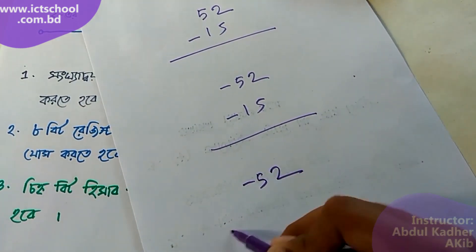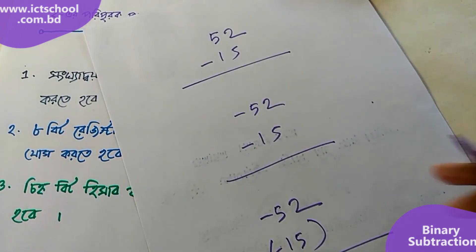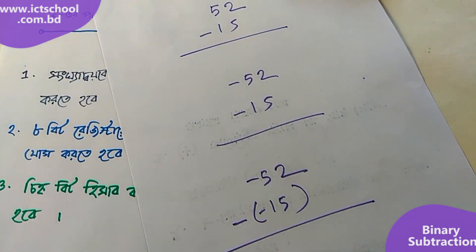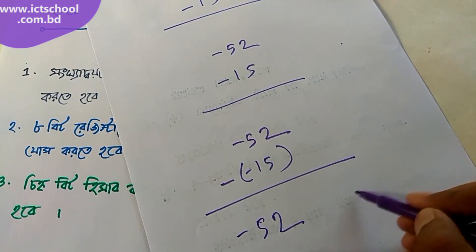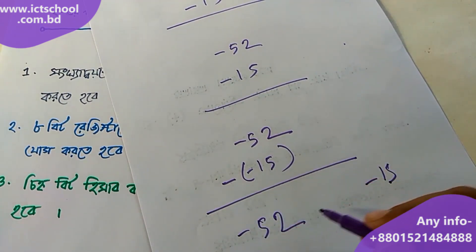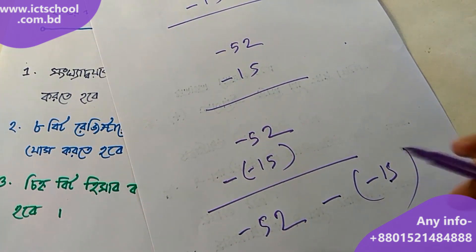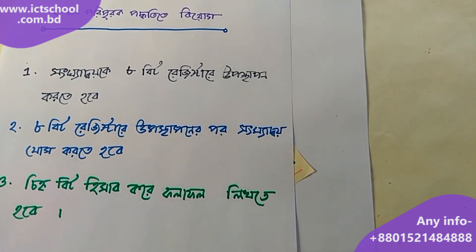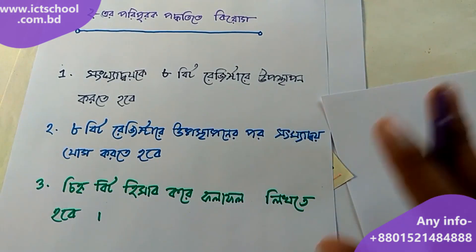Minus 52, minus 15 here, with negative. So we have to look at this, which is minus 52. We will see how to do this — we will not have to do this alone, we will work together in this case.